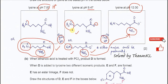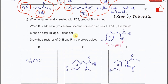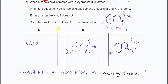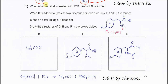These are the possible answers. Part B. When ethanoic acid is treated with PCl₅, product D — ethanoyl chloride — is formed. When D is added to tyrosine, two different isomeric products E and F form. Before discussing E and F, let's look at how D is formed.